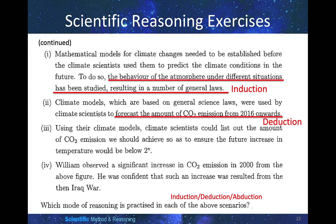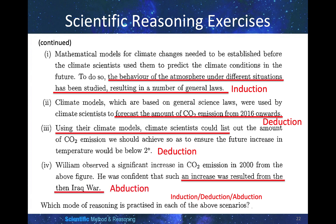Scenario three: using their climate models, climate scientists list out the amount of CO2 emissions we should achieve so as to ensure the future increase in temperature would be below 2 degrees. This is deduction, because the climate scientists use their models to figure out what would happen. Scenario four: William observed a significant increase in CO2 emissions around 2000 from the figure, and was confident that such an increase was the result of the Iraq War. This is abduction, because he is guessing the cause.